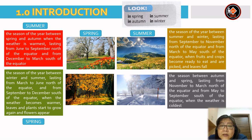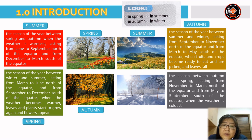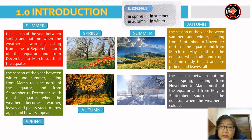Next, the box in brown: the season between summer and winter, lasting from September to November north of the equator and from March to May south of the equator, when fruits and crops become ready to eat and leaves fall. The answer is autumn. Another word for autumn is fall. And the last one: the season between summer and spring, lasting from November to March north of the equator and from May to September south of the equator, when the time is the coldest. The answer is winter.